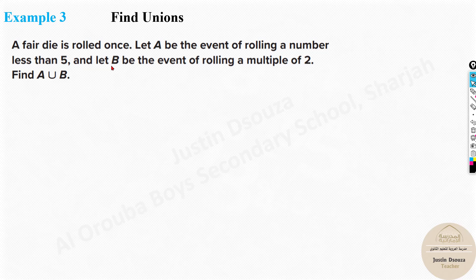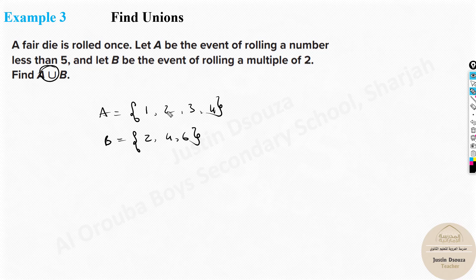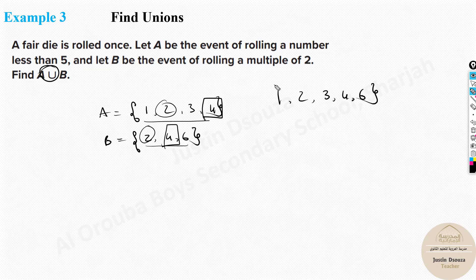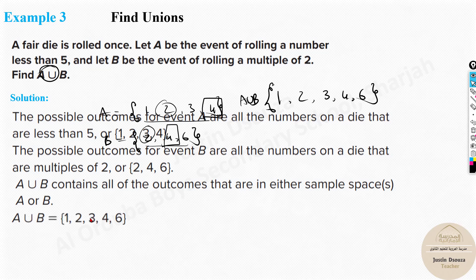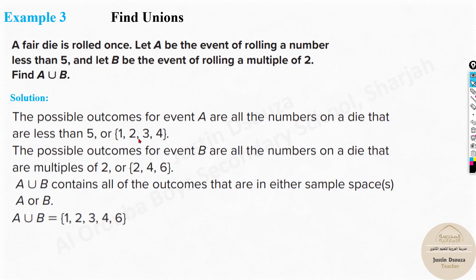Now let's look at the next problem involving union. A die is rolled once. Let A be the event of rolling a number less than 5, so A = {1, 2, 3, 4}. B is the event of rolling a multiple of 2, so B = {2, 4, 6}. For union, write all of them but if a number is intersecting, only write it once. 2 and 4 appear in both, so write them once. A union B = {1, 2, 3, 4, 6}.